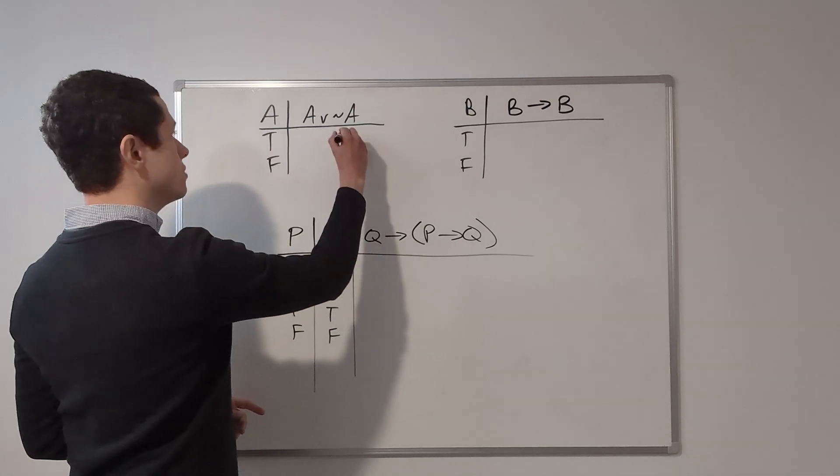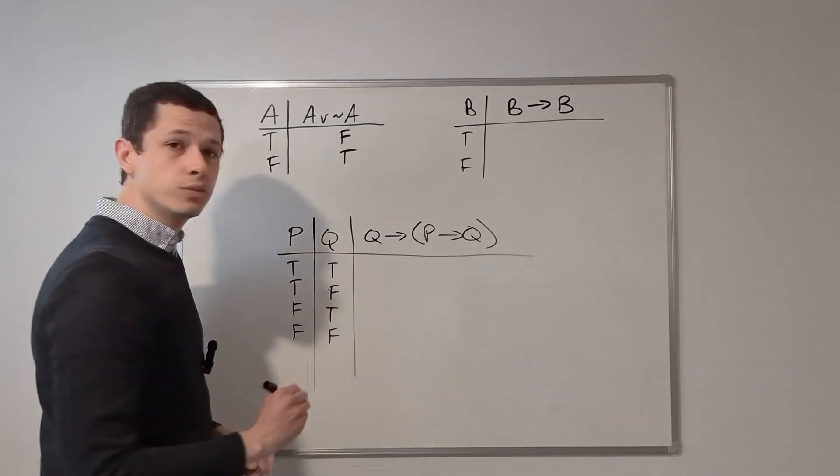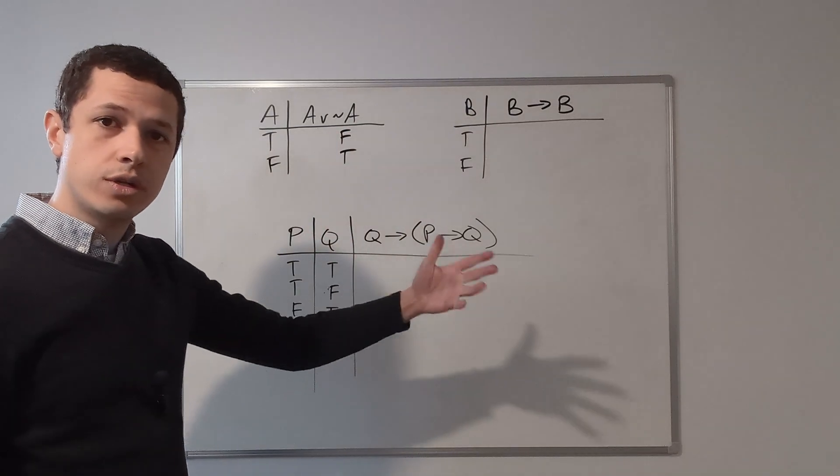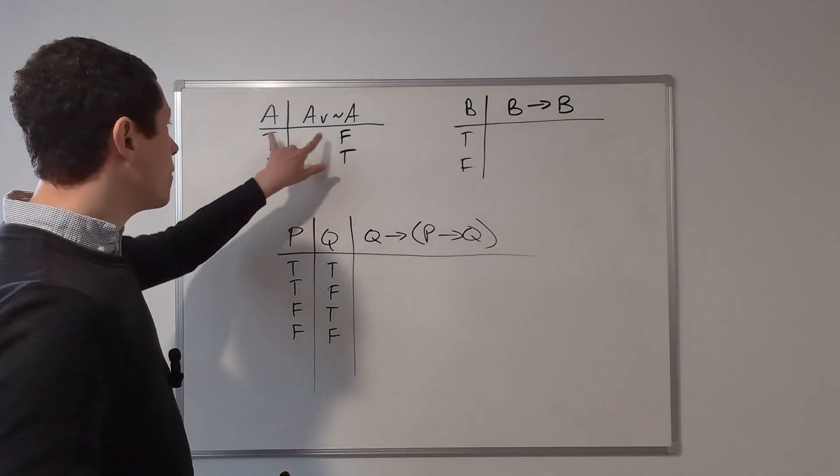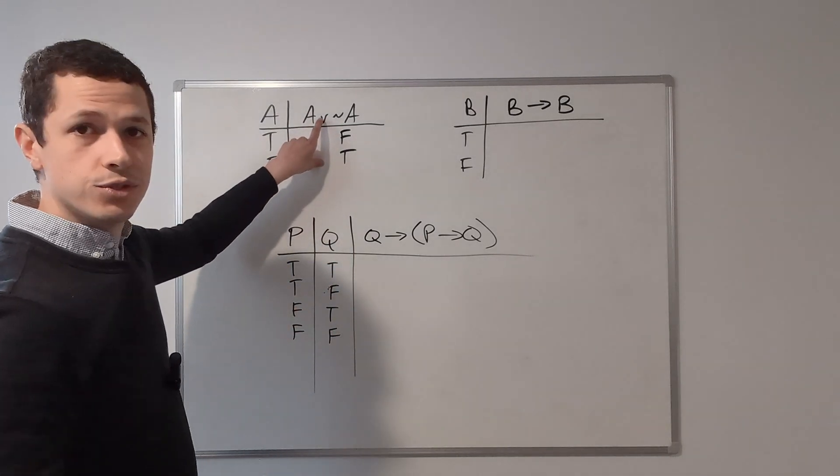So not A is just the opposite of A. So that would be false, true. So when A is true, not A is false. When A is false, not A is true. And now we can just go ahead and calculate this disjunction.